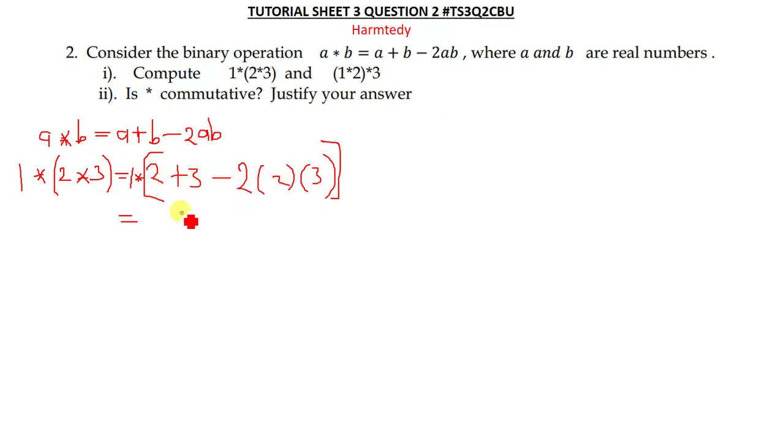Two plus three is five, so I can write five there. Minus two times two is four, four times three is twelve. This will simply give us 1⋆(5 - 12).